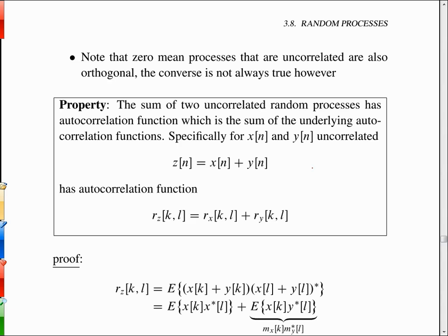Okay, then a property—this is the notation of the Hayes book. For two uncorrelated random processes, the autocorrelation of the sum is the sum of the autocorrelations. And this is a useful property; it's used in modeling a lot, usually when we have a signal and then we have noise that's uncorrelated from the signal.